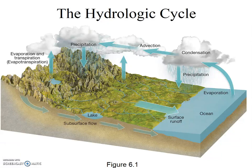The hydrologic cycle is a model that shows us how water moves throughout the Earth system. Notably, the quantity of water on Earth does not change — it simply moves around. The same amount of water exists on Earth today as there was a thousand years ago, and if we fast forward 10 million years into the future, we will have essentially the same amount of water.